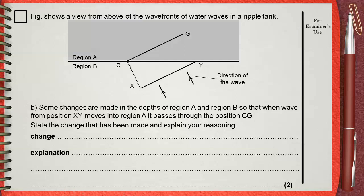Some changes are made in the depths of region A and region B so that when the wave from position XY moves into region A it passes through position CG. State the change that has been made and explain your reasoning.